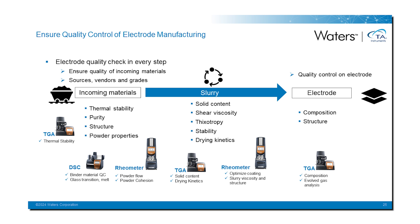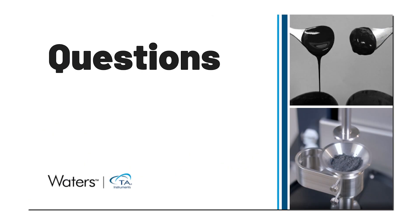Beyond rheology, other important characterizations can be made across the entire process. In the incoming materials phase, TGA can assess thermal stability and purity, and DSC can do QC testing on the binder — assessing glass transition and melting points. In the slurry stage, TGA can determine solid content and drying kinetics. In the finished electrode stage, TGA can determine composition and support evolved gas analysis. This brings us to the end of our presentation — thank you for listening, and we'd be happy to take any questions.